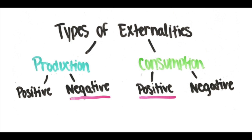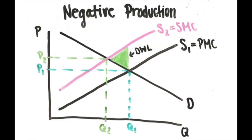There are four different types of externalities, both coming from either production or consumption, and both being either negative or positive. The first main type is negative production, where production causes problems. An example of this is pollution created by firms due to production.